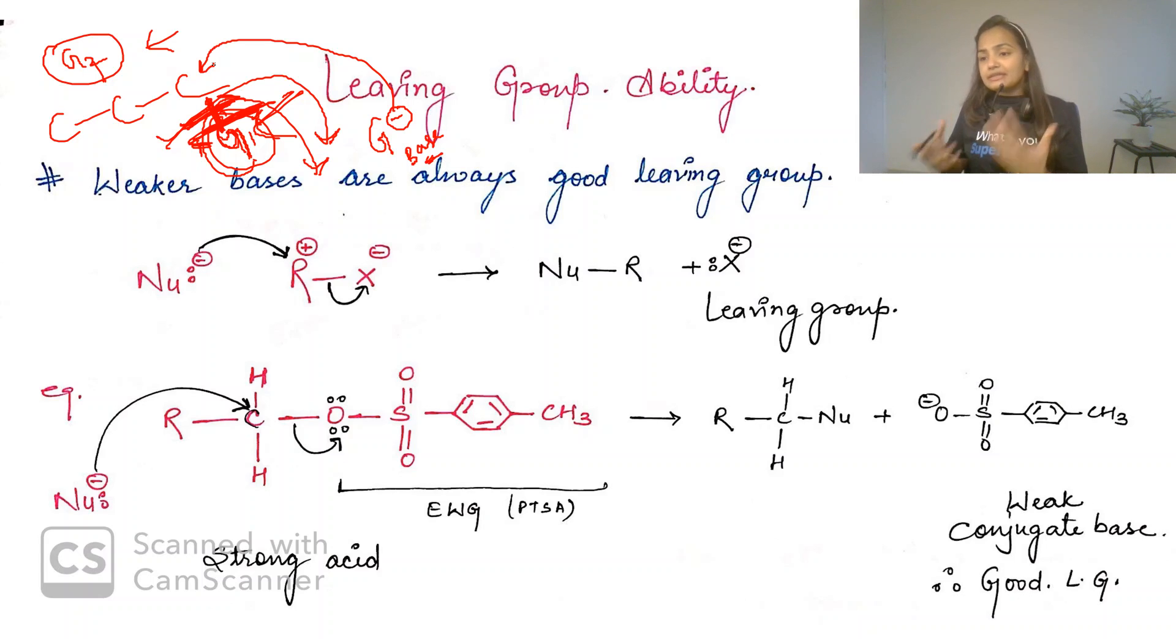Weaker bases are always a good leaving group. Bases are electron rich, they accept protons. Any species that is electron rich and accepts protons is a base. We need weak bases for good leaving groups.